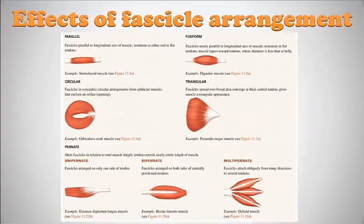The force a muscle can generate is based on its cross-sectional area, measured at 90 degrees to fiber arrangement. Multipennate arrangements have the largest cross-sectional area and can produce the most power, but are the least flexible. Parallel fiber arrangements are the most flexible.